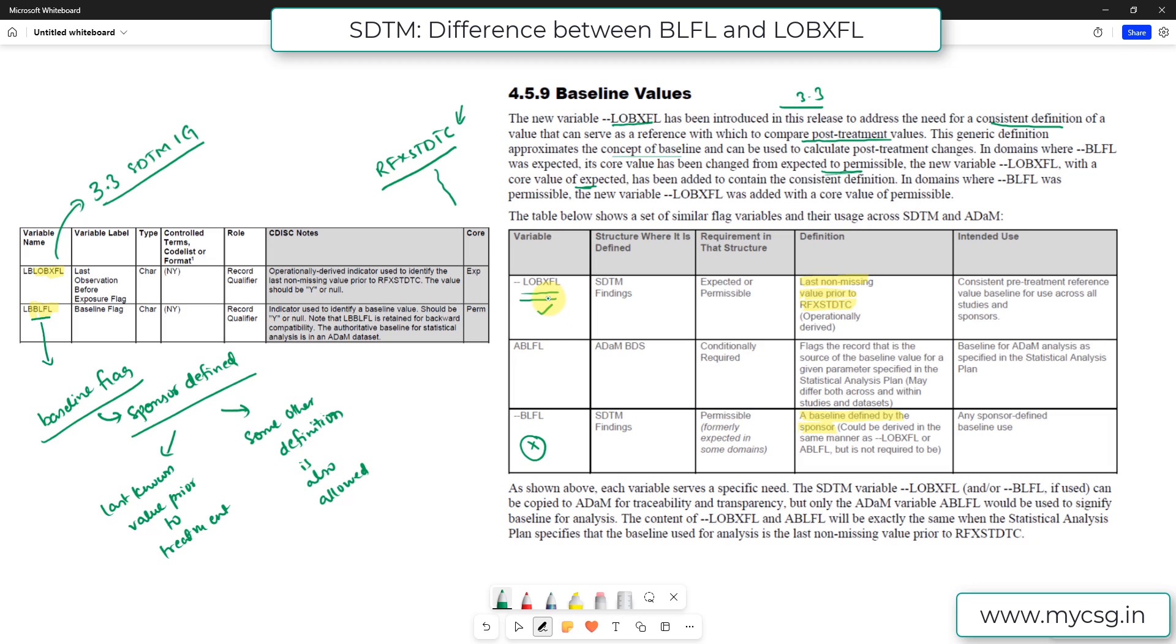So here they are also comparing LOBXFL with other two, which is ABLFL of ADAM BDS datasets and also the previously present BLFL variable. So as shown above in this table, each variable serves a specific purpose. LOBXFL has a specific purpose, and BLFL has a specific purpose, and ABLFL has a specific purpose in terms of ADAM dataset.